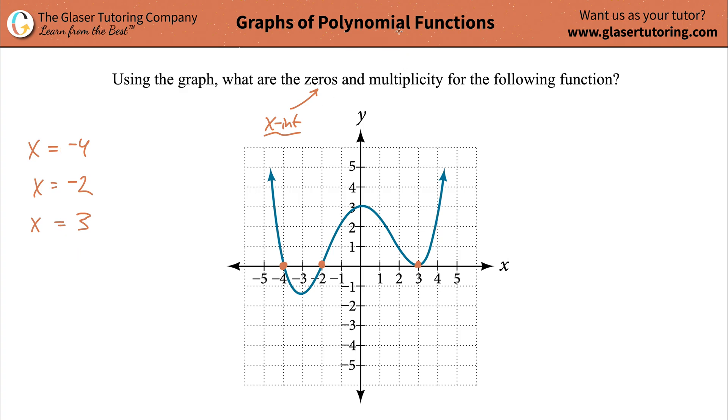Now what we have to do is we have to give the multiplicity of each. Multiplicity kind of means the power of the factor that would give rise to those zeros or those x-intercepts. If you understand why the patterns that I'm going to talk about occur, please take a look at the link in the description below. I explain in detail why certain multiplicities give certain behaviors.